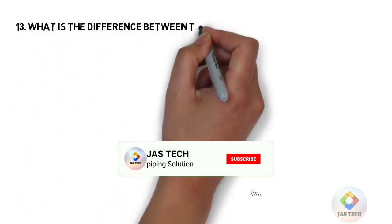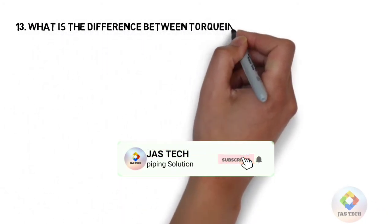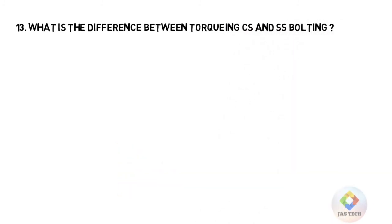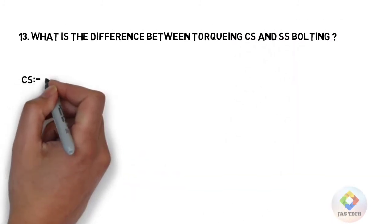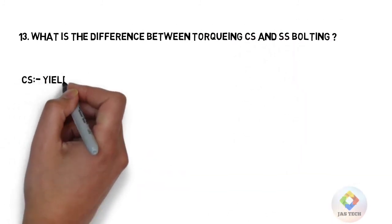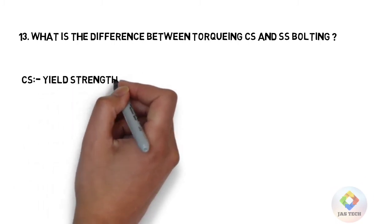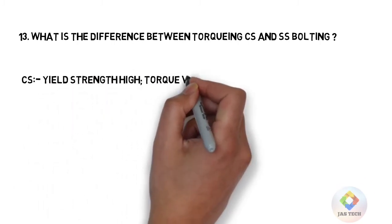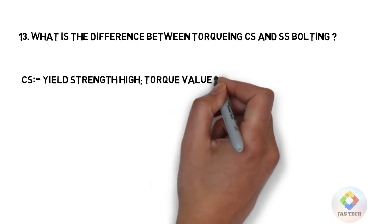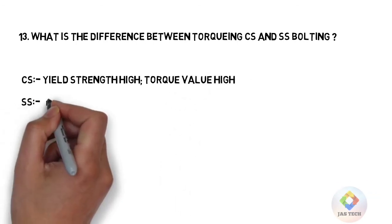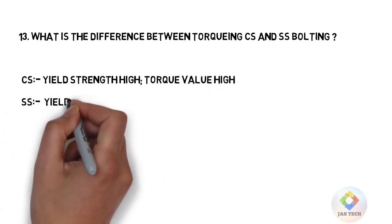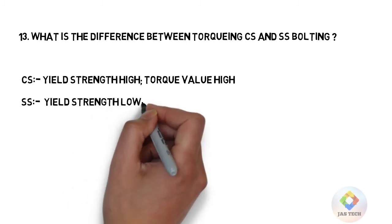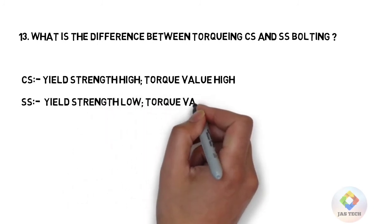Q13: What is the difference between torquing CS and SS bolting? CS: yield strength is high, torque value is high. SS: yield strength is low, torque value is also low.